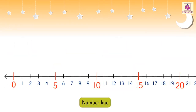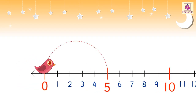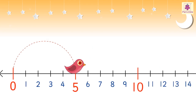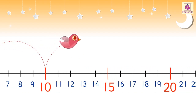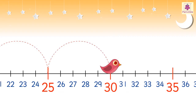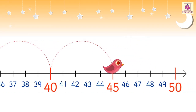Skip counting by fives can also be done using a number line. In order to skip count by fives, we skip four numbers and jump to the fifth number. Look at the bird on number zero — to skip count by fives, it will skip four numbers: one, two, three, four, and hop to number five. Accordingly, it will hop to numbers ten, fifteen, twenty, twenty-five, thirty, thirty-five, forty, forty-five, fifty.